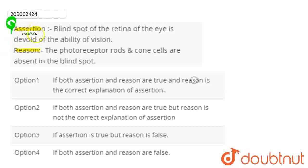The assertion statement has been given here: Blind spot of retina of eye is devoid of the ability of vision. So, this statement is completely correct. Devoid of the ability of vision.